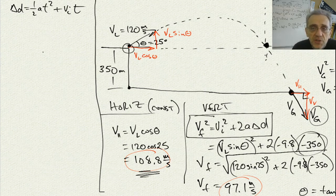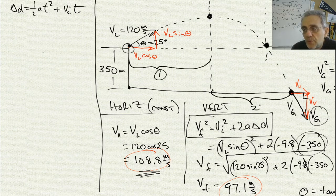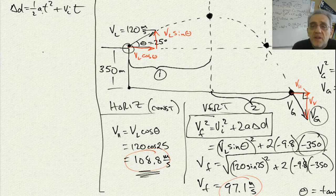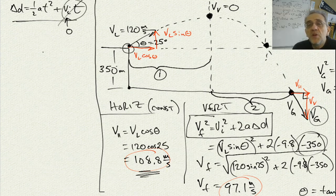Instead, a really good location to cut this is at the very top of the trajectory. That is, part 1 goes from launch to the top, and part 2 goes from the top down to the ground. The reason this is nice is because at the top the vertical velocity is zero, so for the second part the initial velocity is zero and the Vi T term disappears — no longer a quadratic.